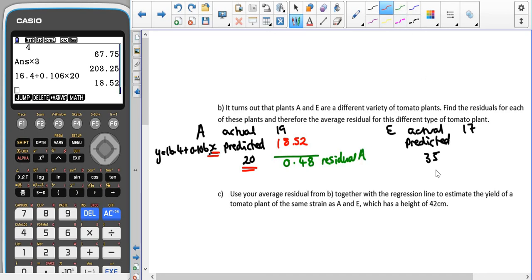For E, again substituting into x, but this time we're doing 35. Substituting 35 in for x, we get 20.11. Actual minus predicted: 17 minus 20.11 gives us minus 3.11. That is the residual for E.